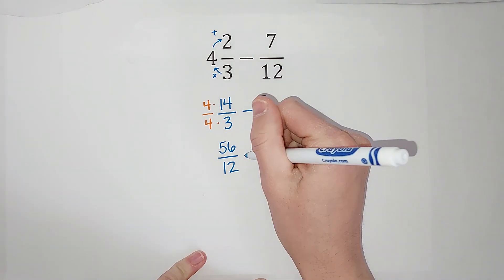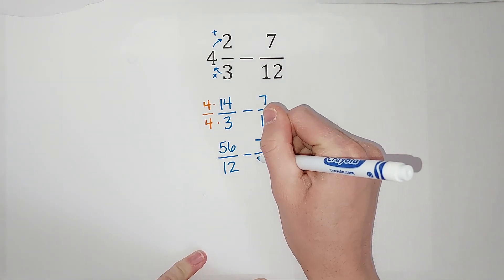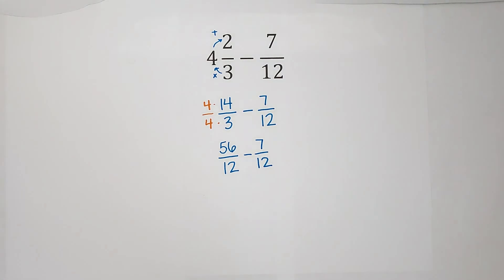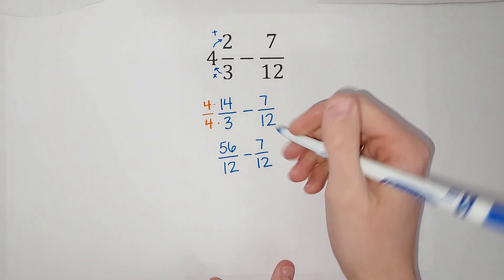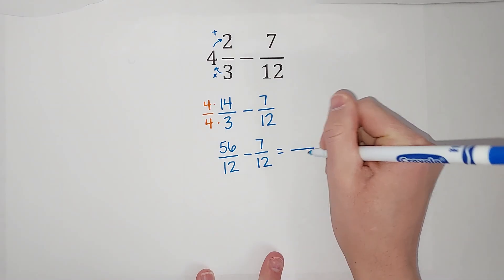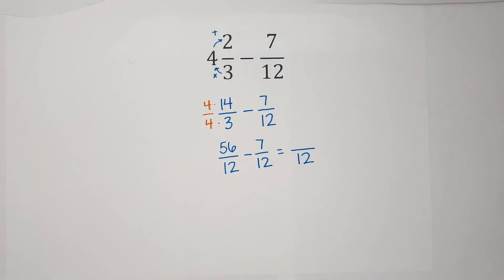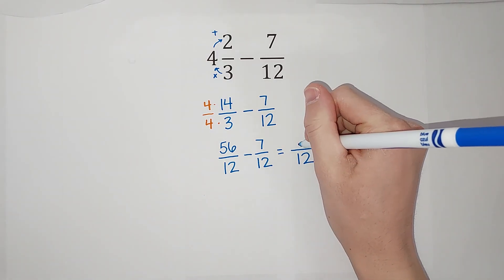We're still subtracting that 7 twelfths. Good news — we are in a good place. Our denominators are the same. When I subtract these, my denominator stays 12; that's why we needed them to be the same. Then we subtract the numerators, the tops: 56 minus 7 gives me 49.